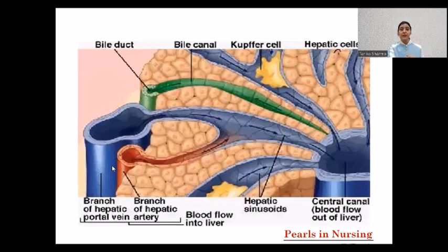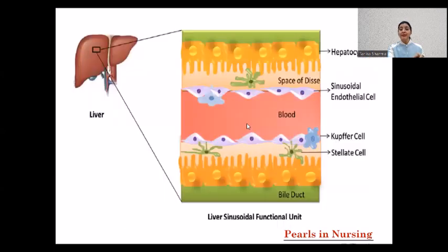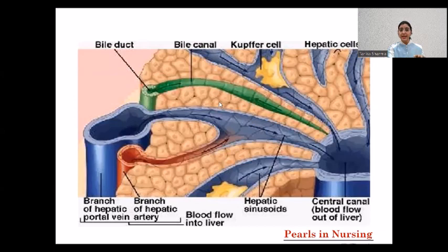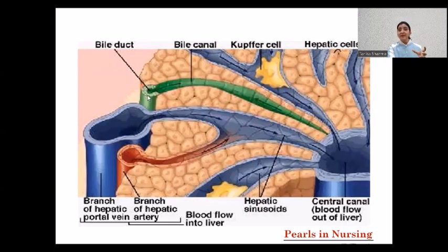Looking at the picture, the portal triad contains a branch of the portal vein and a branch of the hepatic artery. Oxygen is supplied through the hepatic artery and nutrition through the portal vein. Inside the liver lobule, these two join together to form the hepatic sinusoids. Through the sinusoids, oxygen- and nutrition-rich blood is delivered to the hepatocytes. Afterwards, the blood drains into the central canal. The hepatocytes also secrete bile into the bile duct, which is the third component of the portal triad.